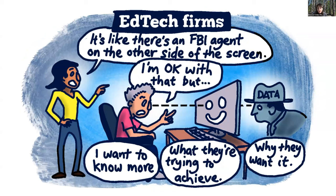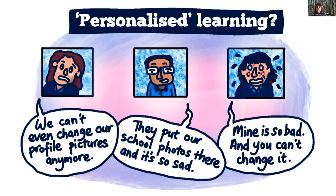Students thought edtech firms were probably accessing their data and were curious about why and how it was being used. Students from a Google school understood that Google was accessing their data but didn't feel they had any control over this. There was also a large group who hadn't thought about the role of edtech firms at all. For many students, data was merely a monitoring exercise — they could see their ranking or grade, and in some contexts it was used as a conversation starter with a teacher. However, students didn't feel empowered to use their data constructively, nor did they feel the data accurately represented who they were.